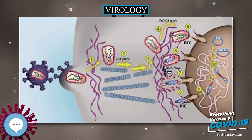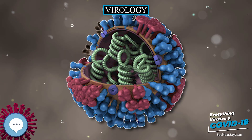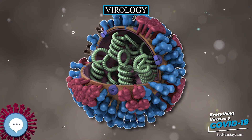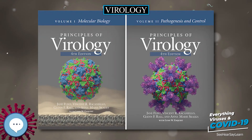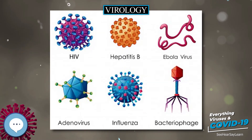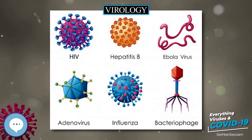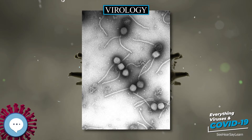In 1908 Bang and Ellermann showed that a filterable virus could transmit chicken leukemia, data largely ignored until the 1930s when leukemia became regarded as cancerous. In 1911, Peyton Rous reported the transmission of chicken sarcoma, a solid tumor, with a virus, and thus Rous became the father of tumor virology. The virus was later called Rous sarcoma virus and understood to be a retrovirus. The existence of viruses that infect bacteria, bacteriophages, was first recognized by Frederic Twort in 1911 and, independently, by Felix d'Herelle in 1917.